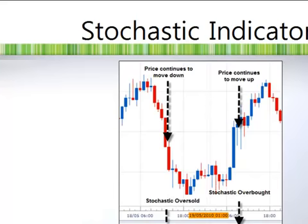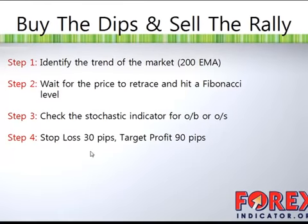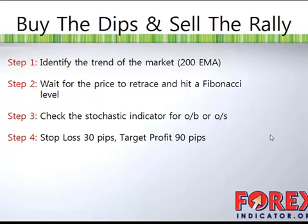Once you check the stochastic indicator for overbought or oversold, you enter a trade. At this point, you always set a stop loss of 30 pips and your target profit at 90 pips. With this strategy, you always get a risk-reward ratio of 1 to 3, which is a very decent risk-reward ratio.